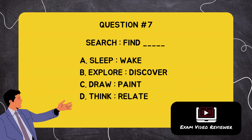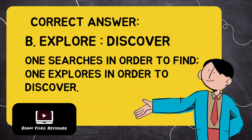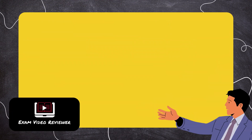Question number seven: search is to find as blank. Letter A: slip is to wake, Letter B: explore is to discover, Letter C: draw is to paint, Letter D: think is to relate. The correct answer is Letter B, explore is to discover. One searches in order to find; one explores in order to discover.